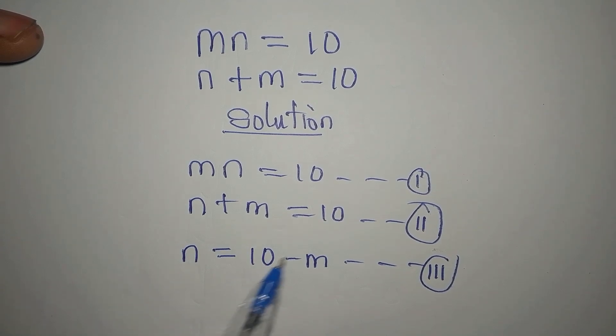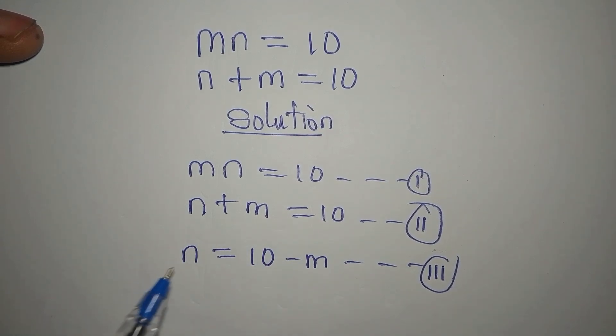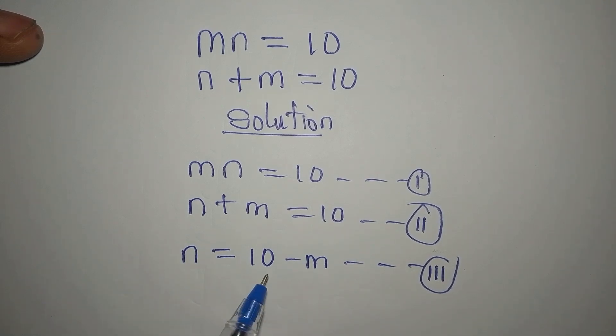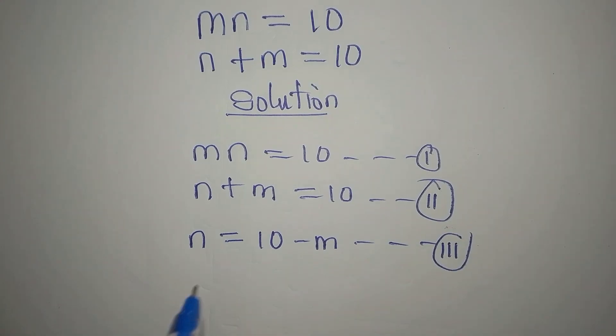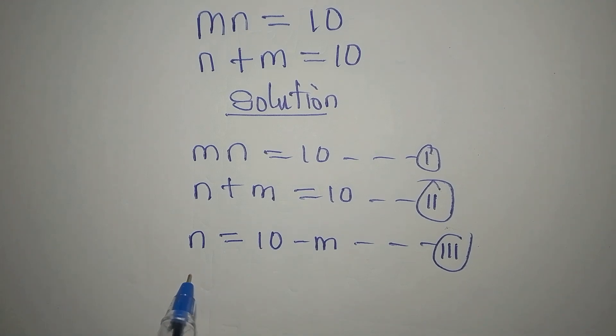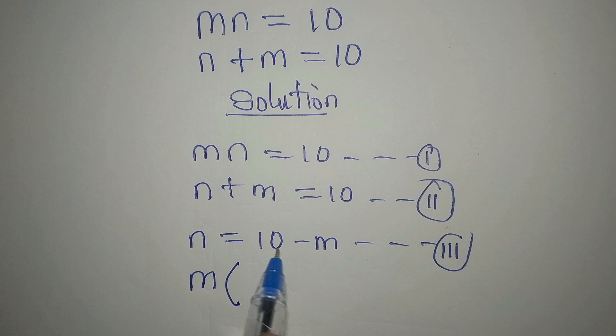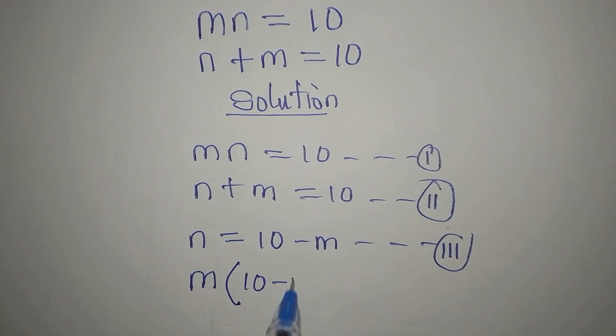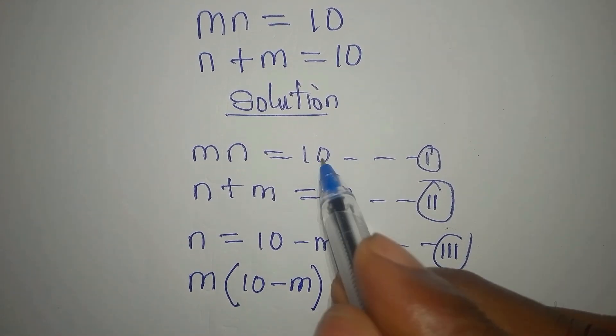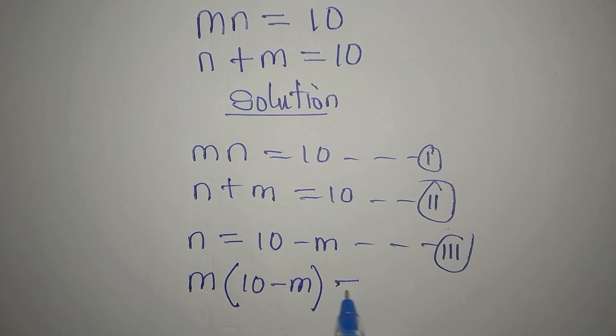Now, it is equation 2 that birthed equation 3. So we'll put this equation 3 into equation 1. So we're going to have m times n, but n is now 10 minus m, and that equals 10.